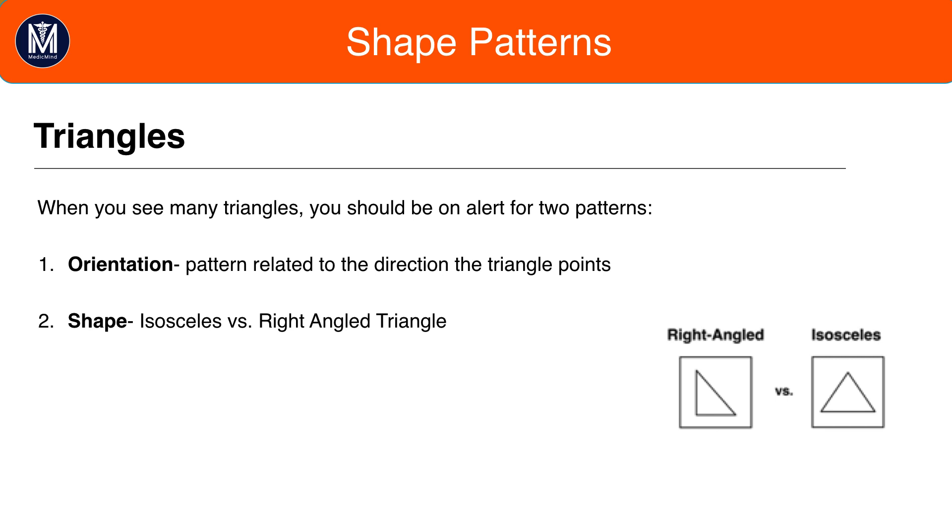When you see triangles, you should be on alert for two patterns. Firstly, triangles could point. Secondly, there could be a split between isosceles and right angle. A common pattern is that set A has isosceles triangles and set B has right angle triangles, or vice versa.